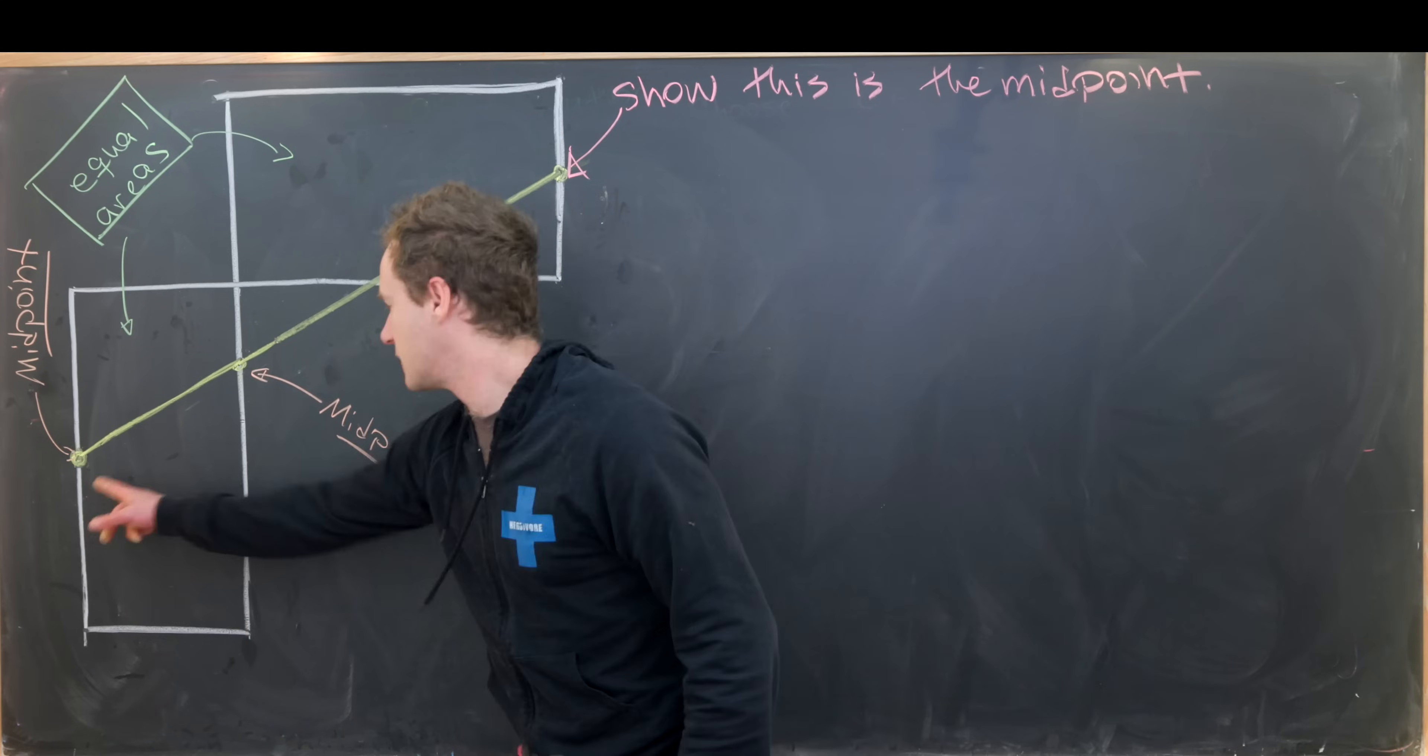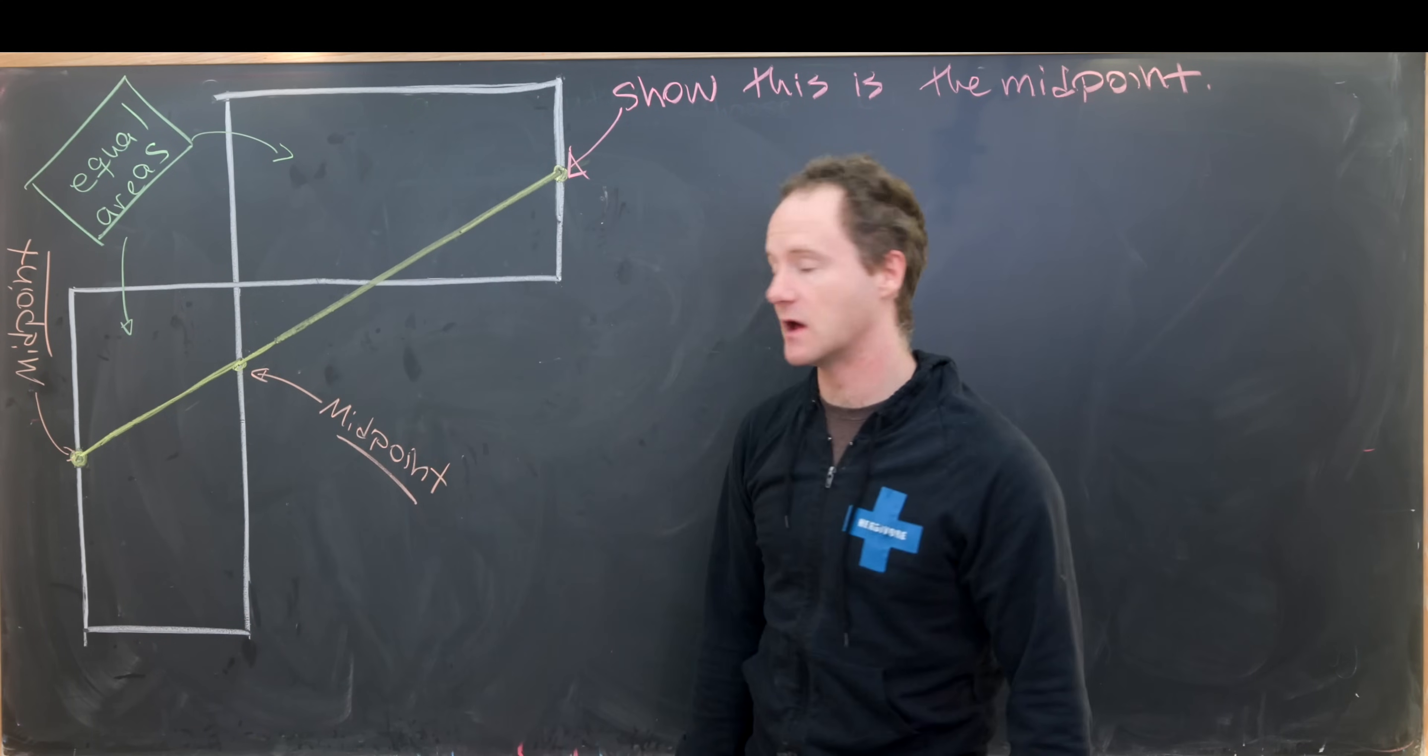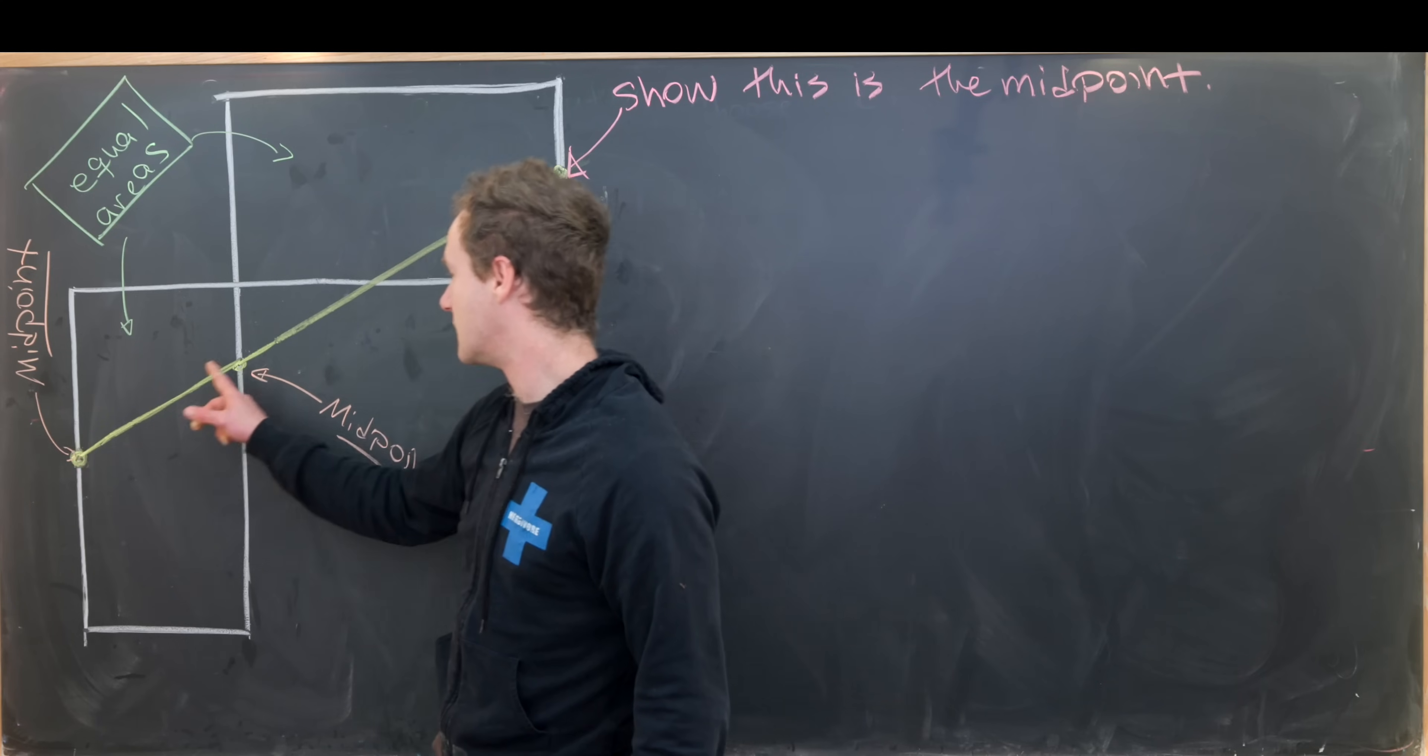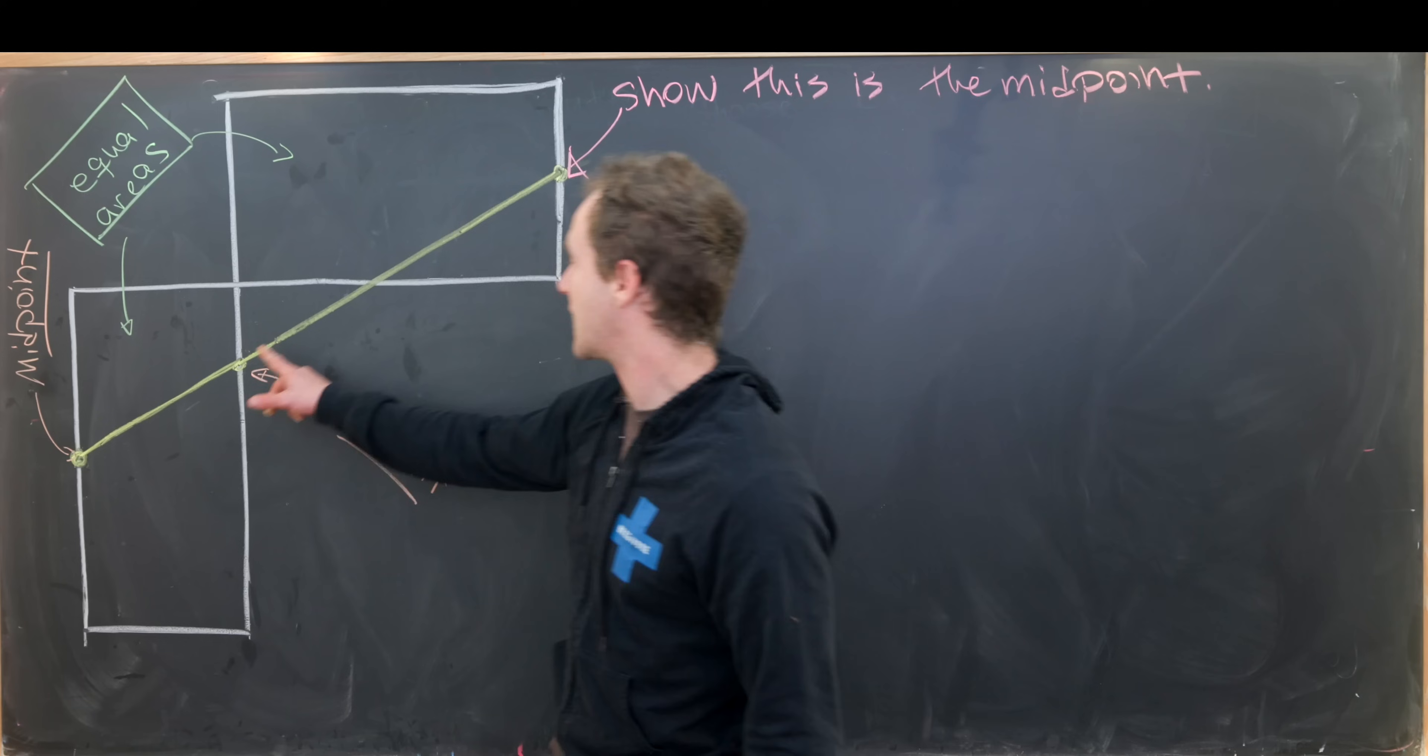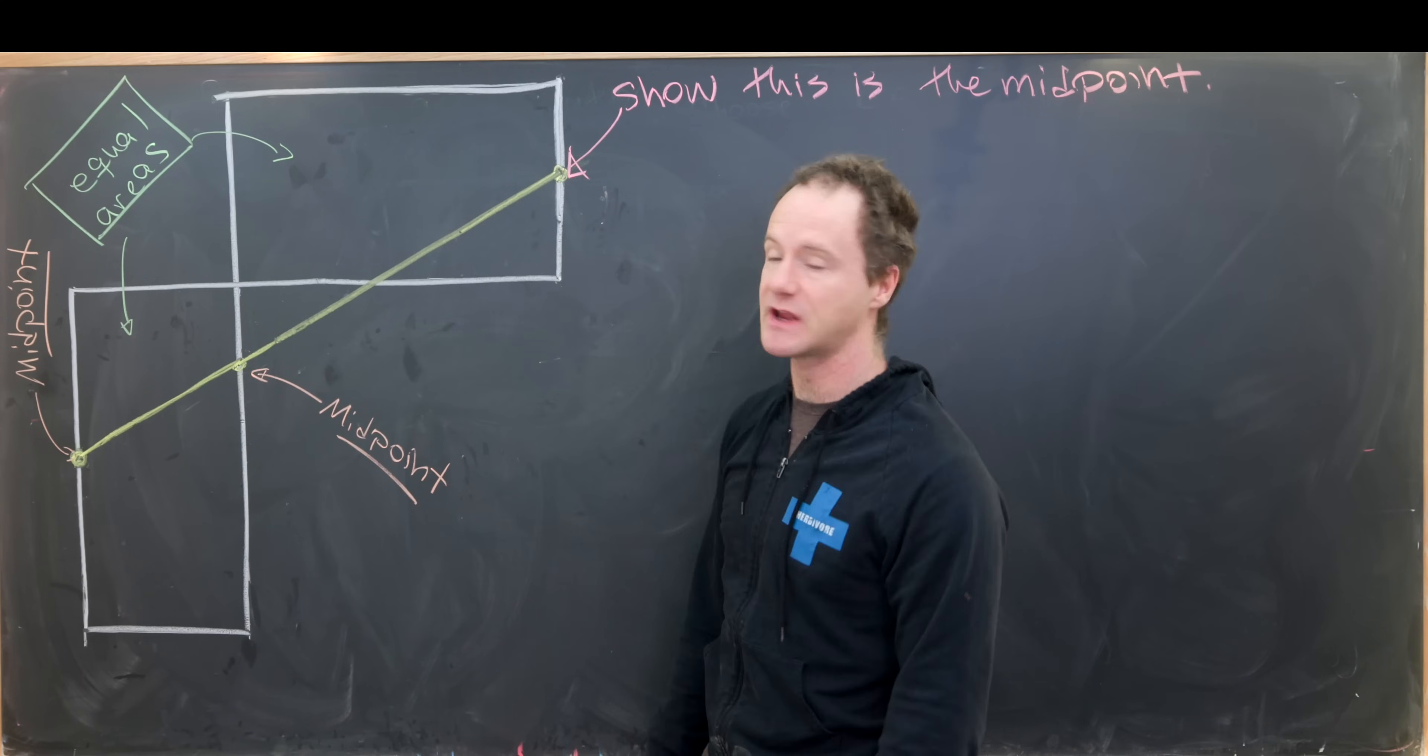All of these sides are parallel and similarly all of these sides are parallel. And then the midpoint here and the midpoint here define a line which intersects this edge over here.